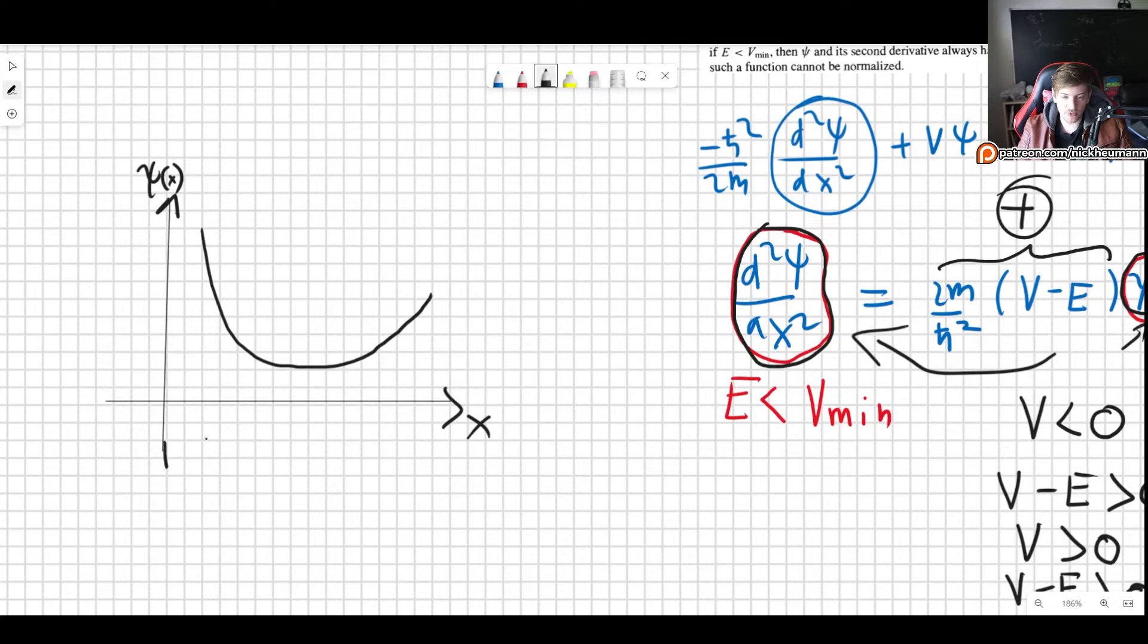And if the wave function is negative, it will be somewhere over here. This is the axis for the wave function. And it's going to be sloping downwards because its second derivative will be negative. So this is what it will look like.